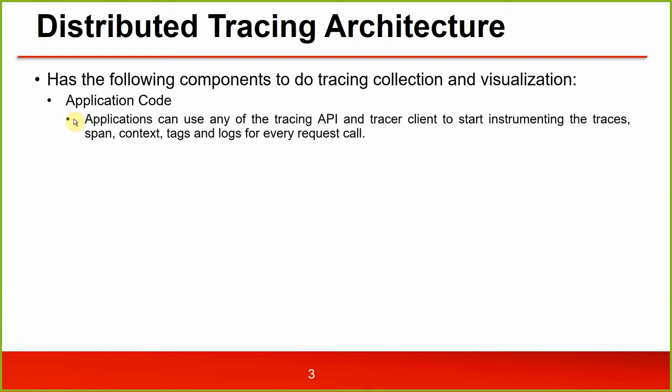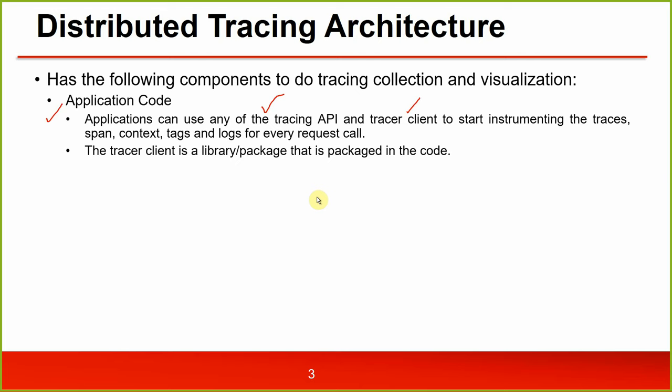If you want to monitor applications, you need to do application-level instrumentation - expose the metrics and make them available. The application can use any of the tracing API and the tracer client to start instrumenting the traces. You have to write within the code what details you want to monitor - span context, tags, and logs for every request call. Whenever you receive a request call and write a controller for it, you specify these details within that controller.